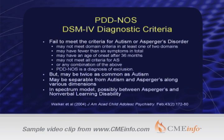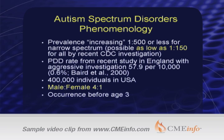And of course, because it's such a large catch on the spectrum, it may be twice as common as autism. The prevalence is one in 500 or less for narrow spectrum autism spectrum disorders.